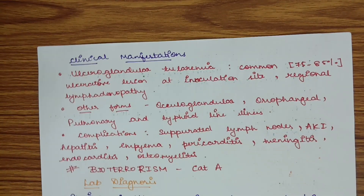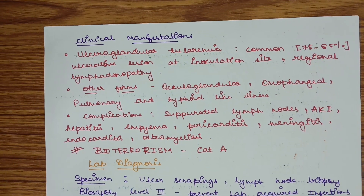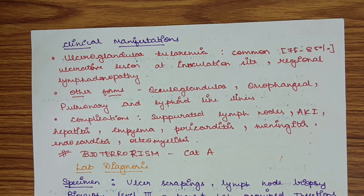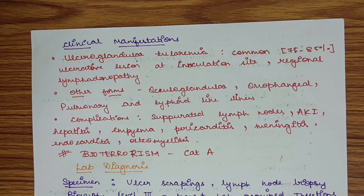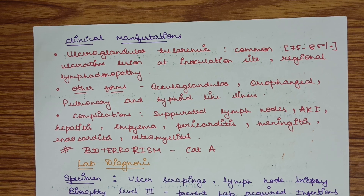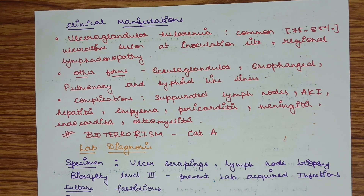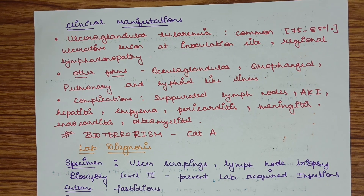The clinical manifestations include ulceroglandular tularemia, which is the most common clinical manifestation, seen in 75-80% of people suffering with tularemia. The ulcerative lesion occurs at the inoculation site, leading to regional lymphadenopathy.